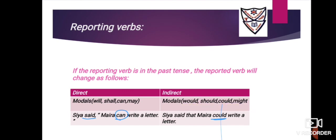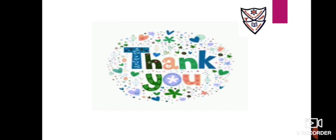However, if the direct speech already uses the past-form modals — 'would,' 'should,' 'could,' 'might' — you cannot reverse them; they remain unchanged. For example, 'Siya said, Mayra could write a letter' stays as 'Siya said that Mayra could write a letter.' 'Could' remains 'could,' 'would' remains 'would,' 'should' remains 'should,' and 'might' remains 'might.' Thank you — that's it for this session. We'll continue in the next session.